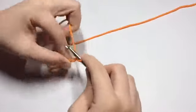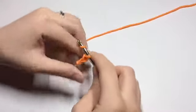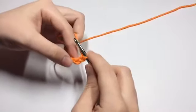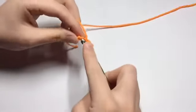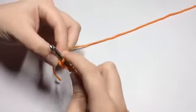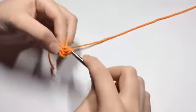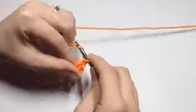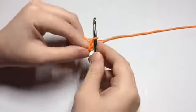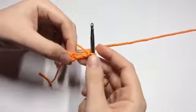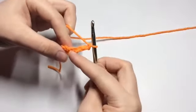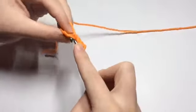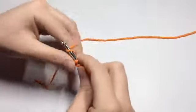So we're going to begin by chaining three. And then in the very first chain we are going to do a double crochet. And then we will chain three. And then turn our work. And in the exact same stitch as our chain, we're going to insert a double crochet.